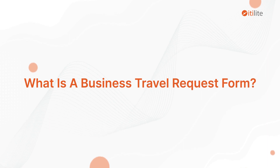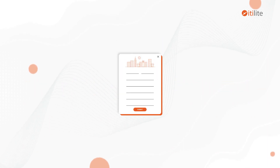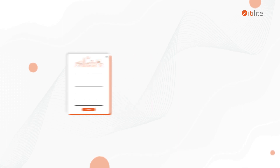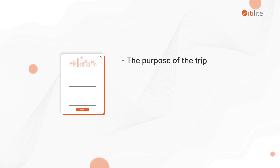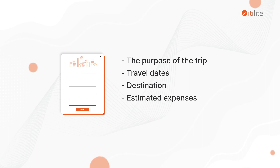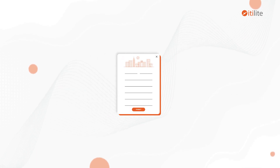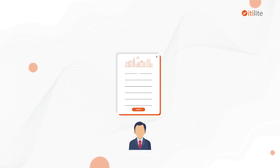What is a business travel request form? A business travel request form typically contains information such as the purpose of the trip, travel dates, destination, estimated expenses, and the names of any travelers. The form serves as a record of the request for travel and is used to obtain approval from a manager or supervisor for the travel expenses.